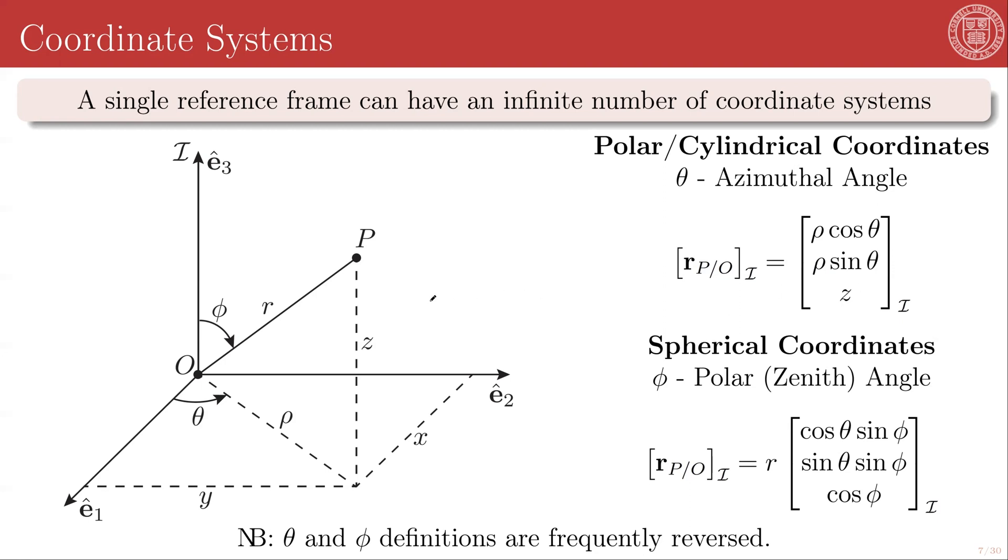We can go further and define the spherical coordinates, which are now replacing all of the Cartesian coordinates with two angles and a magnitude of the vector. So r in this case, that r is equal to the magnitude of r of P/O. So that's why we make a distinction. Rho is not the magnitude of it. Rho is the magnitude of the projection down to this plane. And we will formally define projection in just a little bit.